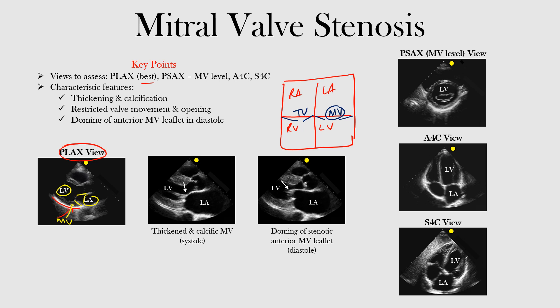Looking at the middle image, we see a thickened and calcific mitral valve during systole. Here's the left atrium and left ventricle — the arrow points to the calcific, thickened mitral valve, which appears much brighter compared to a normal valve. That brightness is due to the thickening, which is what we see in mitral valve stenosis. The image on the right shows doming of the stenotic anterior mitral valve leaflet during diastole — the arrows point to this doming of the anterior leaflet.